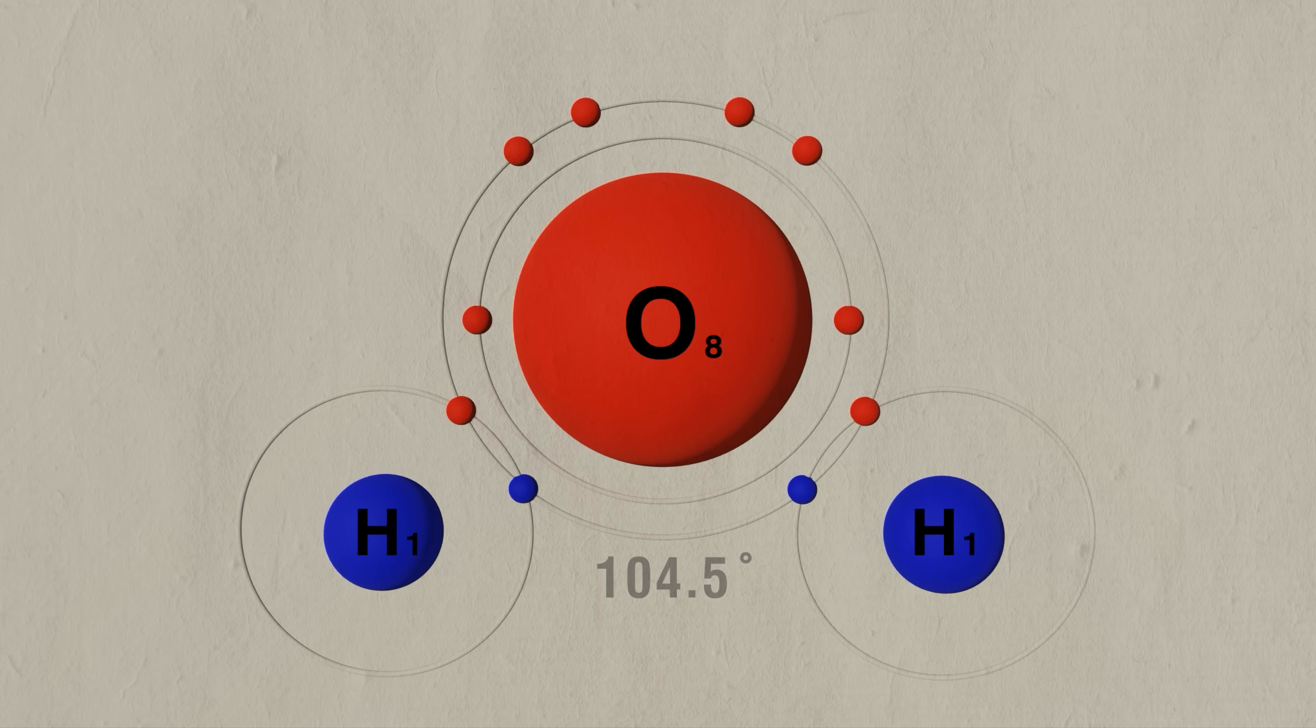The oxygen atom also shares one electron with each of the hydrogen atoms, in order to create a more stable molecule. This sharing of electrons between the atoms creates a strong bond, which is also known as a covalent bond.